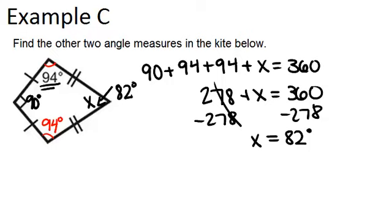So the first missing angle was 94 degrees, and the second one, using the fact that they all have to add up to 360, has to be 82 degrees.